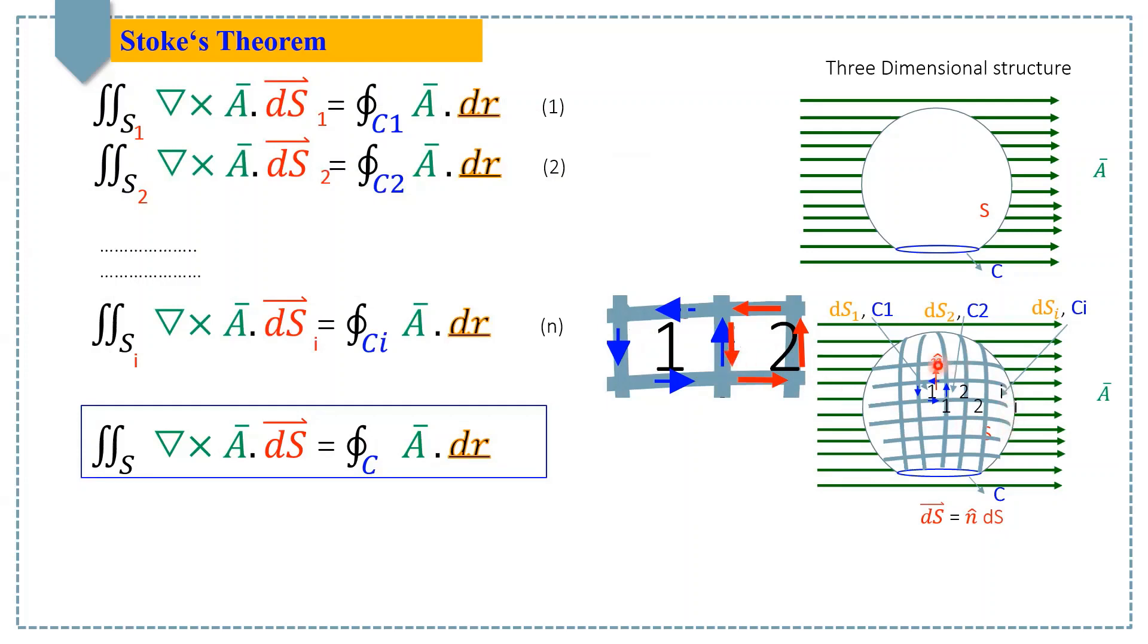It means that all the common sides among the elements are not contributing to the total line integral. But the contributions to the line integral are only due to the sides of the rim of this inverted pot, which is represented by C. And here you can see C from the red arrows on this rim. Hence, the right side of this equation is made of the line integrals only based on this rim C.